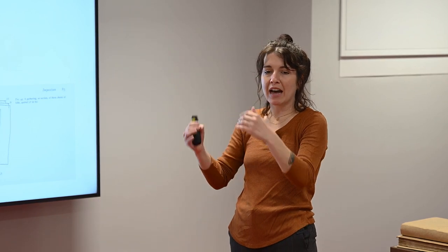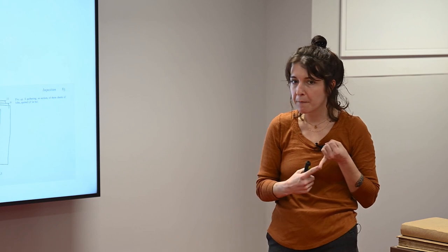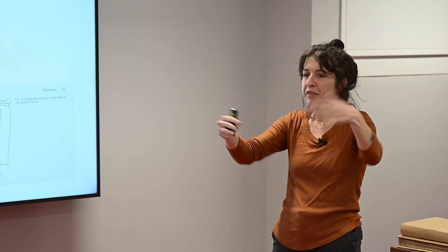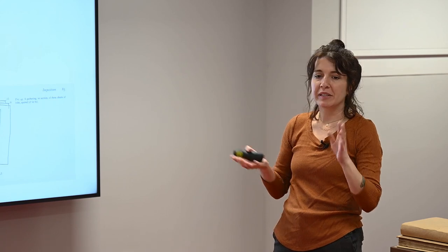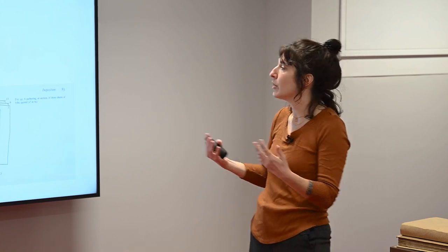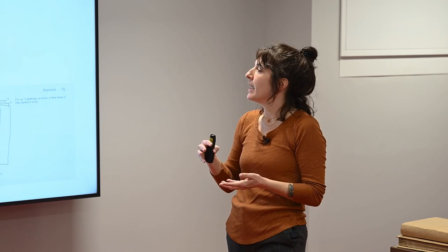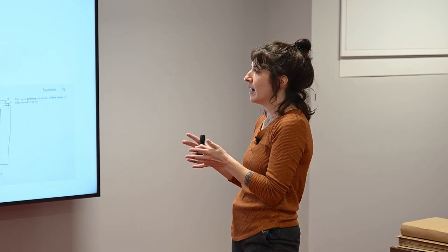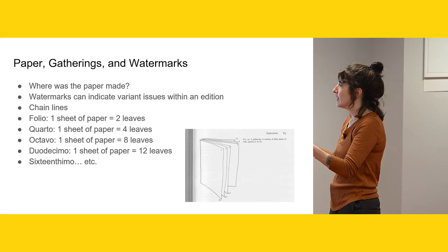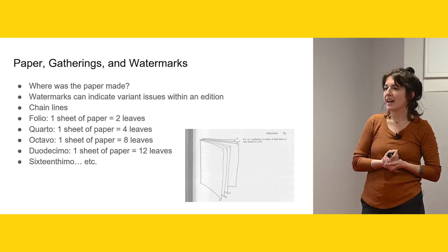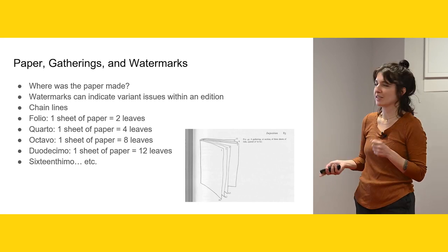The paper always has chain lines, which you can see on the pages in front of you, and that indicates how the gatherings are going to be. It could be a folio — one sheet of paper folded in half to make two leaves, feel free to mess with the papers in front of you to see what the chain lines would look like. It could be a quarto, folded so that there are four leaves. It could be an octavo, folded so that there are eight leaves. It could also be a duodecimo, folded so that it has twelve leaves. I've seen a sixteenth — 'sextodecimo' — and I just like that word.